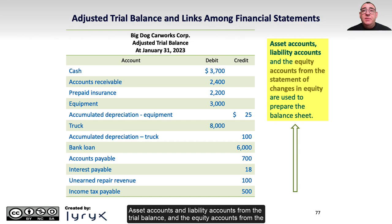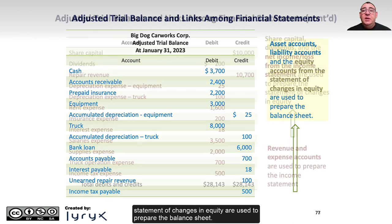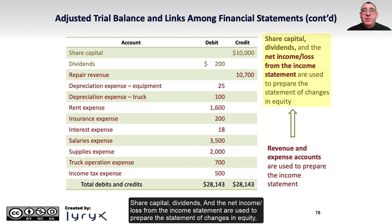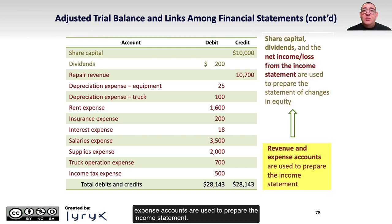Asset accounts and liability accounts from the trial balance, and the equity accounts from the statement of changes in equity, are used to prepare the balance sheet. Share capital, dividends, and the net income or loss from the income statement are used to prepare the statement of changes in equity, and revenue and expense accounts are used to prepare the income statement.